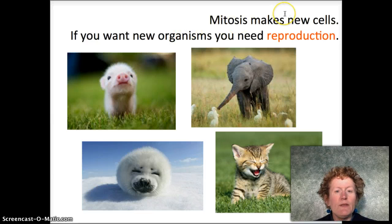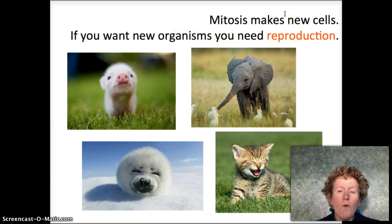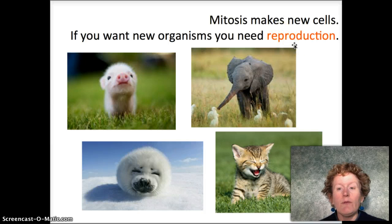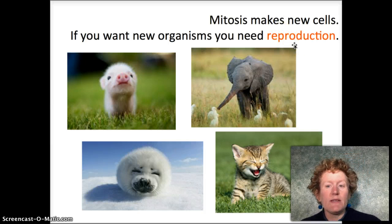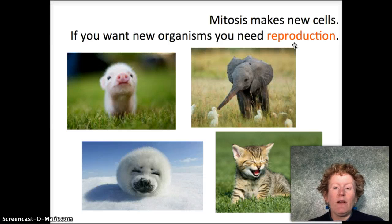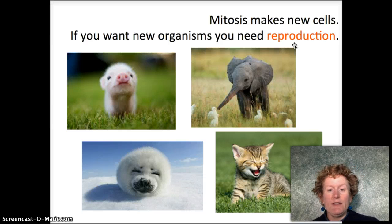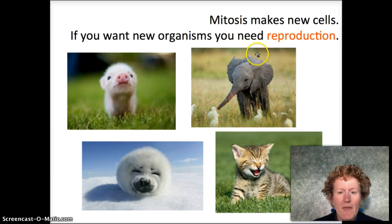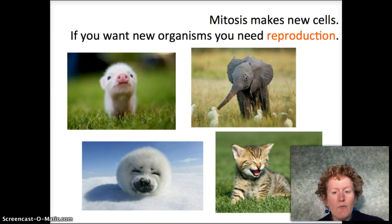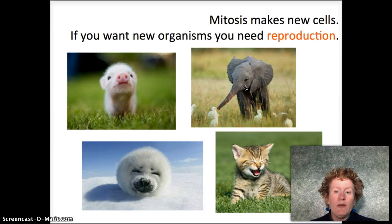Mitosis makes new cells, but if you want new organisms, you need reproduction. Reproduction is a more complex process and involves something called meiosis, but we're going to study that in a different video. If you want to make more baby animals — not just more cells — you need a process called reproduction.